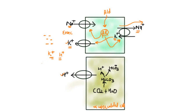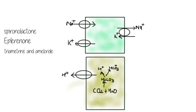The potassium sparing diuretics have two classes of drugs. The first class is the aldosterone receptor blockers, which include spironolactone and eplerenone. The second class is the sodium channel blockers, which include triamterene and amiloride.